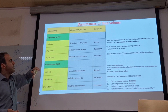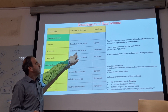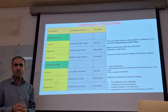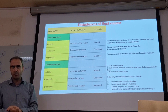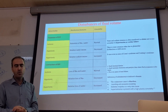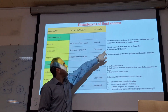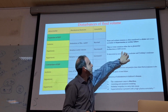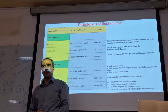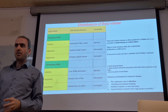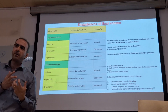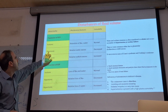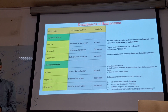Hypotonia means we have relative water excess — water retention with sodium loss. What happens to osmolality? Osmolality decreases. It is due to dysfunction of the glomerulus or ADH excess. When ADH works too much, water is reabsorbed. Sodium is sometimes lost, leading to hypotonic expansion of ECF.